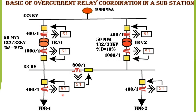The relay code 51 is the ANSI code for a non-directional overcurrent relay. The fault MVA for the 33 kV bus is 1000 MVA. This lecture covers how relay coordination is done and the philosophy behind it.